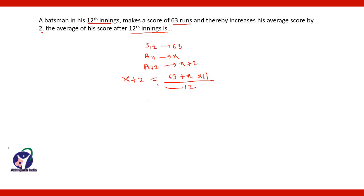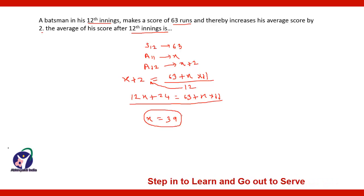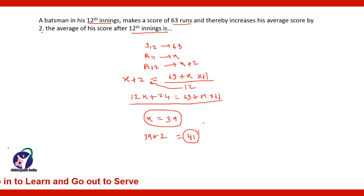Multiply by 12 to this side, so it will be 12X plus 24 equals 63 plus 11X. Now collect the terms which have variable X to one side and constants to the other side and solve this linear equation to get X equals 39. This X is the average of first 11 innings, and the average after 12 innings will be 39 plus 2, which is 41.